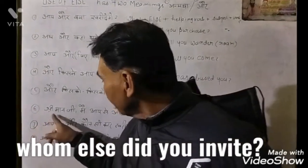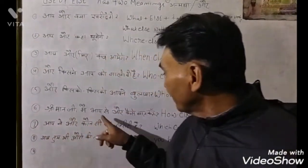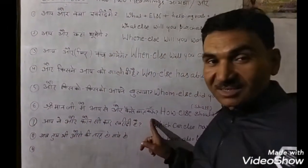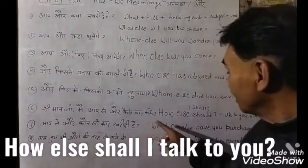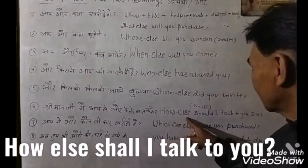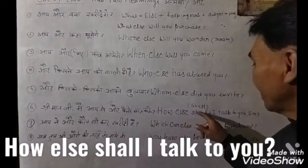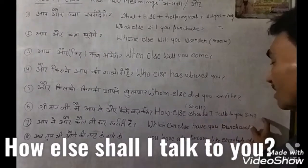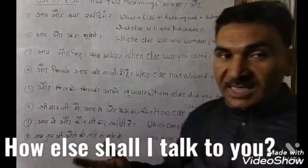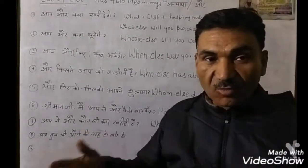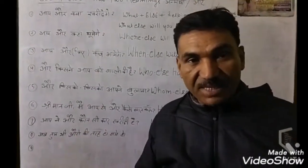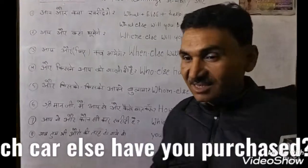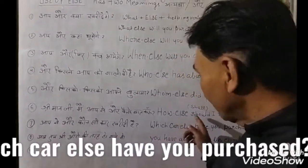Now the next one: श्रीमान जी, मैं आप से और कैसे बात करूँ? So: 'How else shall I talk to you?' जब 'shall' आता है — जाओ, खाओ, पढ़ो — तो 'shall' भी आप लगा सकते हैं, और 'should' भी लगा सकते हैं। Right, this is very important.